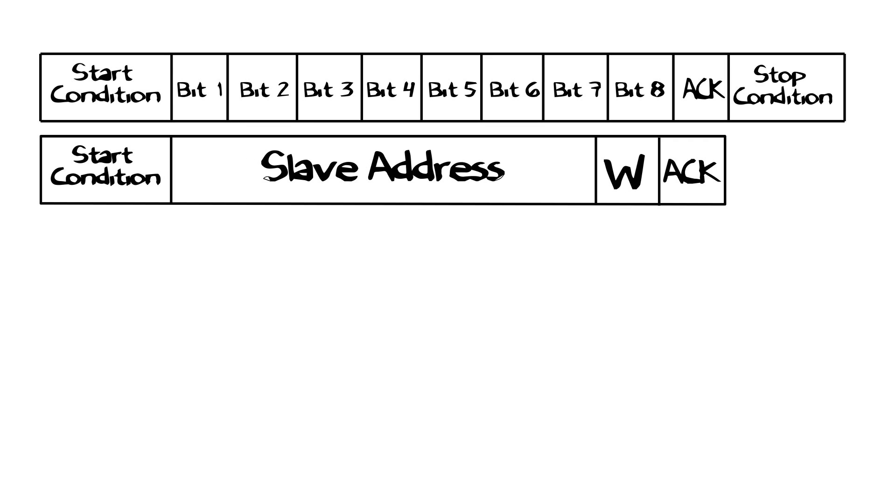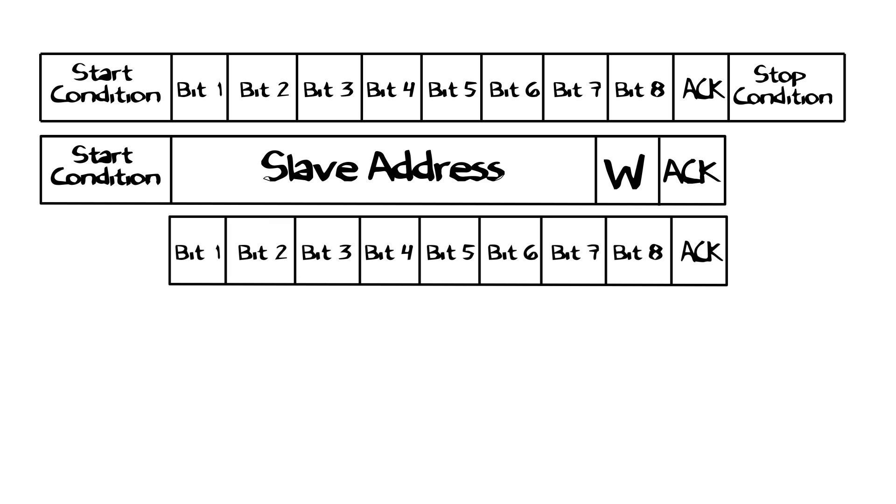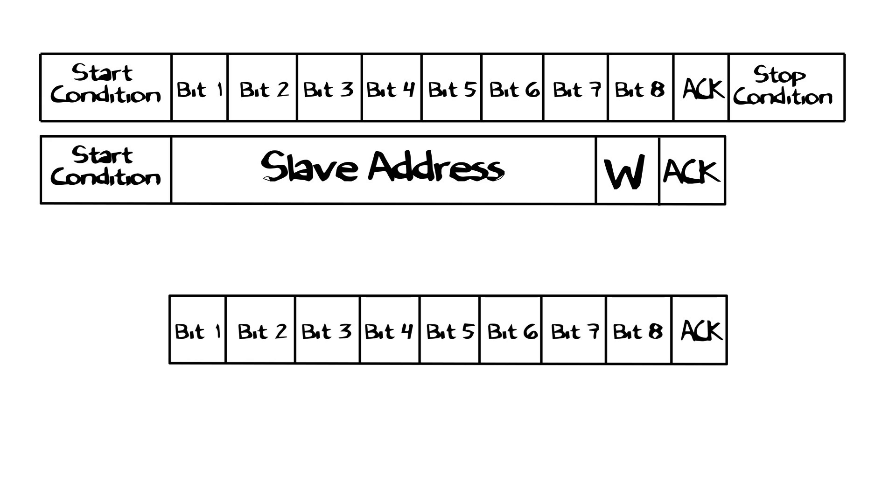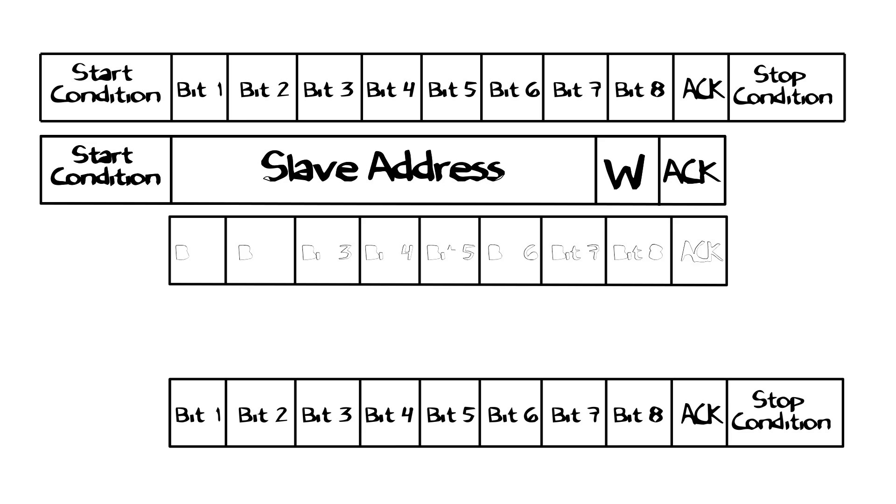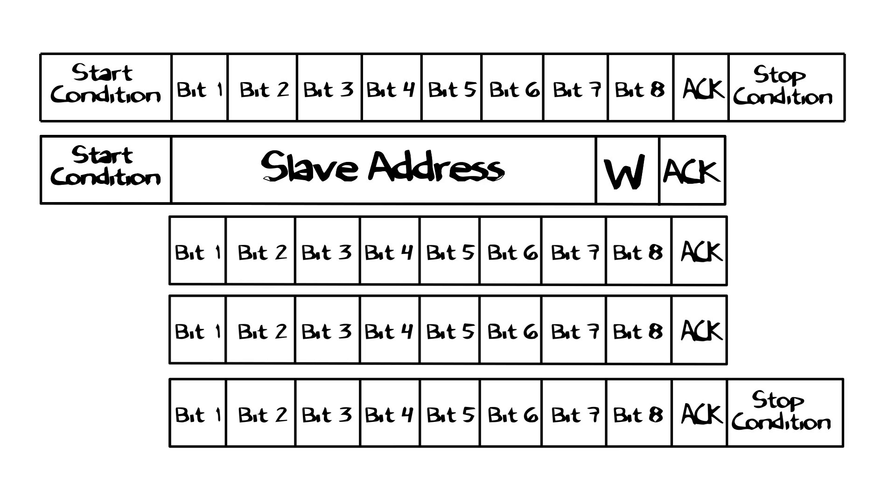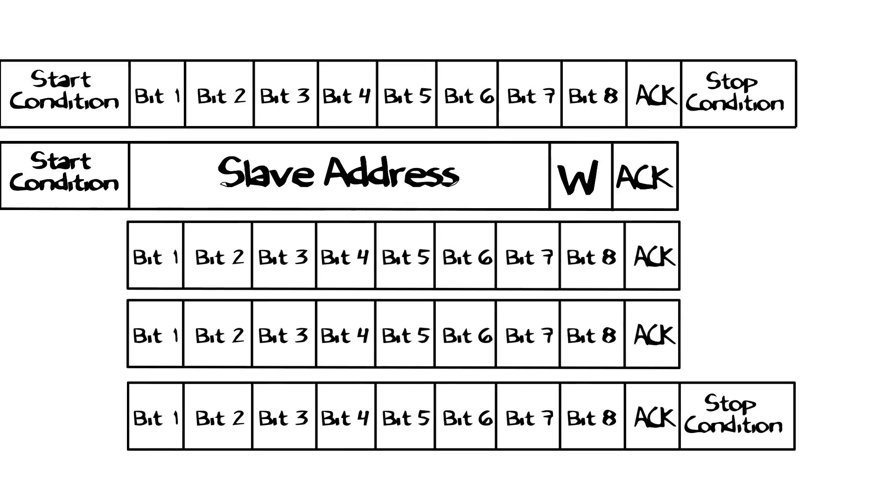The slave will respond with an ACK bit for that address. The master then continues in write mode per the bit it sent. And the slave continues in the complementary mode. Both master and slave use ACK after every byte to confirm that the correct device is present and to verify correctly received data, providing a very robust transmit receive architecture.